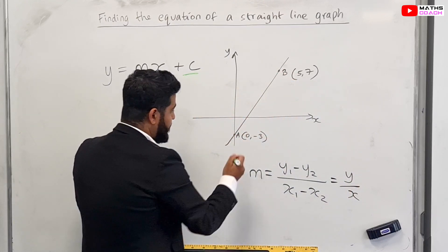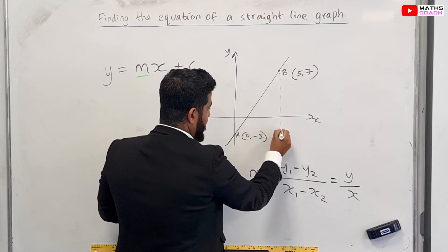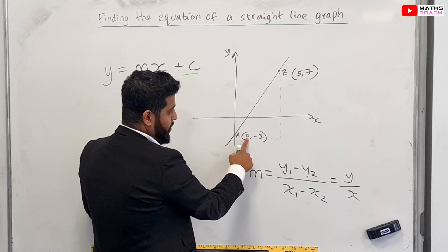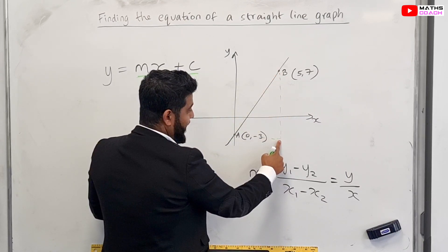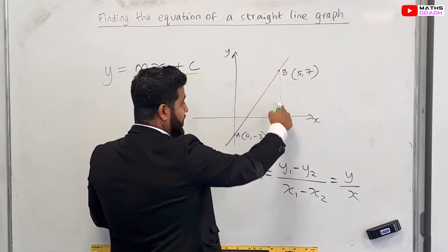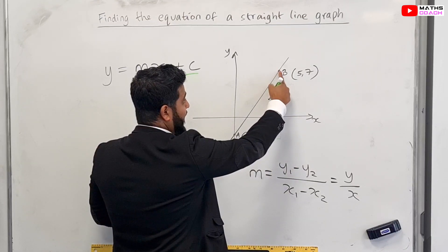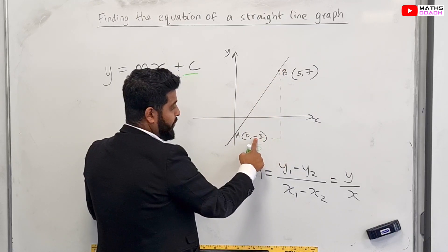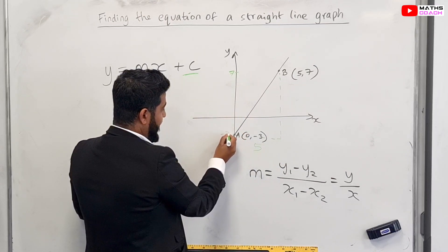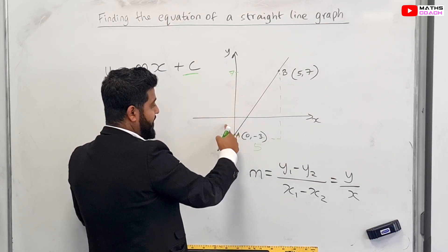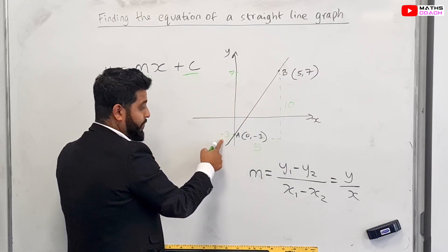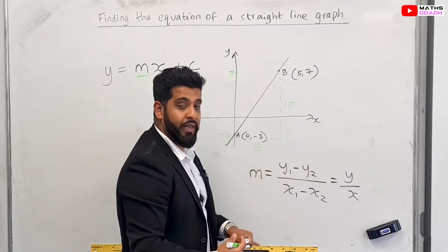Let's draw in our right angle triangle. Here the value of x is 0 and here the value of x is 5, so the length in x is 5. Here the value of y is 7 and the value of y here is minus 3, so the distance in y is 10. You could find that by doing 7 minus minus 3, and this is how that part of the formula is used.